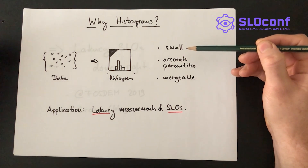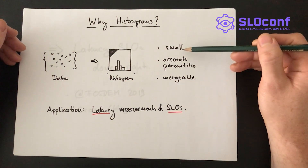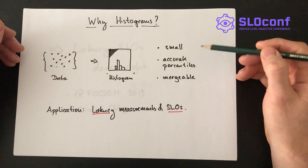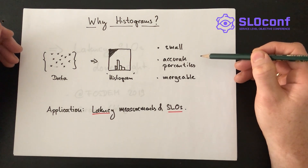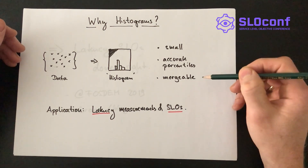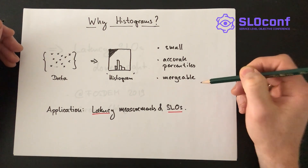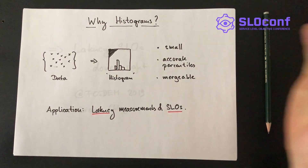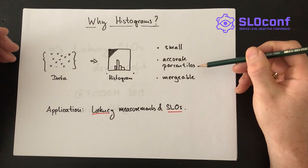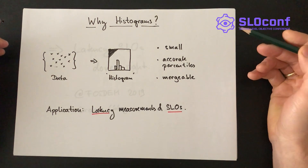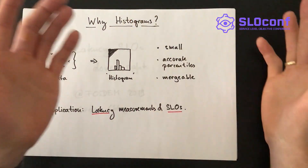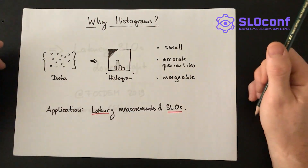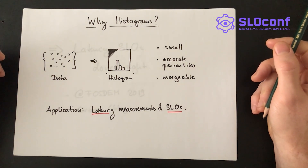We call it a histogram if it has three critical properties. First, it should be small — instead of storing raw data, a histogram usually has a much smaller memory footprint. Second, you should still be able to calculate accurate percentiles. Third, and more subtle, it should be mergeable. If you have not one histogram but maybe a thousand or millions of histograms, you should be able to compress them into a single histogram without losing accuracy for percentile calculations — so that merging batches of histograms gives the same result as having all the data at once, ideally with bounded error.